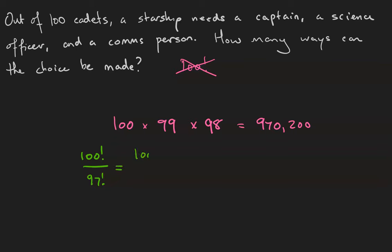Well, that's going to be 100 times 99 times 98 times 97 times dot dot dot times 1 over 97 times 96 times dot dot dot times 1. And the 97 through 1 all cancel, leaving us with exactly 100 times 99 times 98.